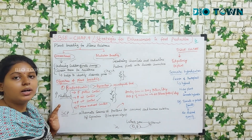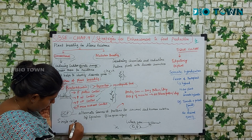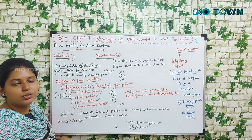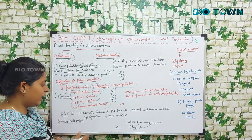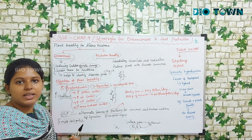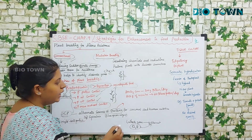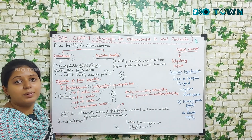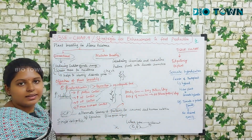Next we'll talk about SCP — Single Cell Protein. These are basically microbes which have enormous protein content in them, and they serve as alternate sources of protein. For example, if vegetarians don't want to eat meat for protein, they can have single cell proteins. They are used for animal nutrition as well as human nutrition. For example, Spirulina, which is a blue-green algae. Now there is a very important statistical data here.